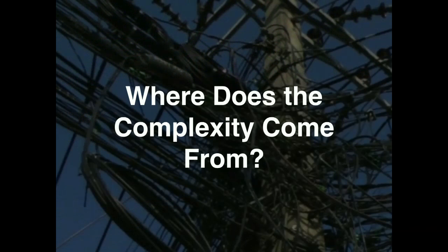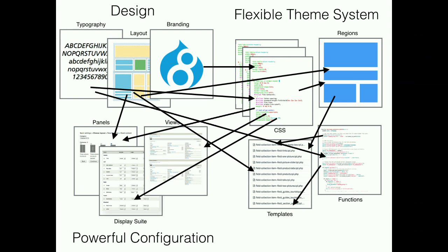So where does the complexity come from? I think it comes from three main things. First, Drupal theming is really flexible, which allows us to create something really complex. Second, we have a lot of configuration that integrates with the theme, so there are a lot of dependencies back and forth. And finally, as themers implementing a design, sometimes that complexity we inherit from the design process — the design process is really messy, and then the theme becomes this behemoth thing.